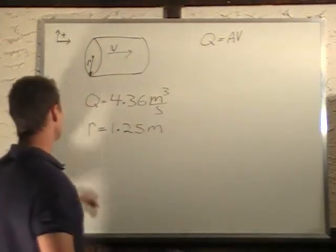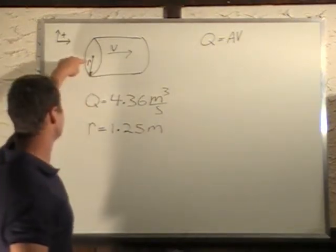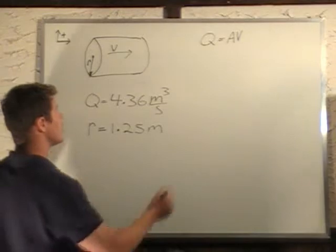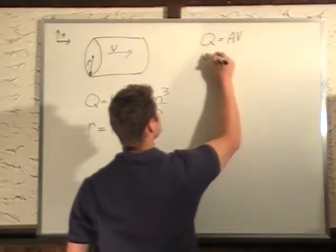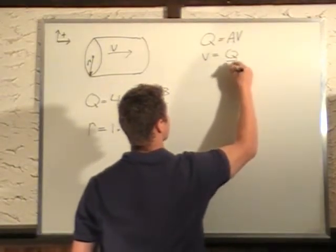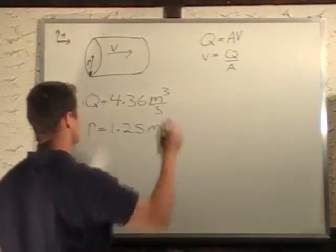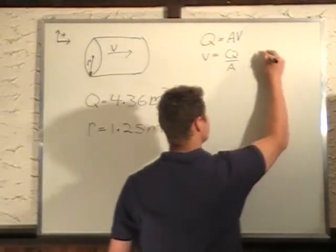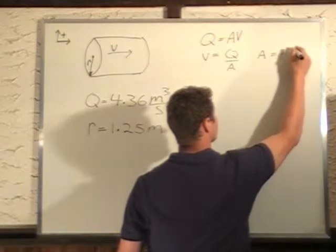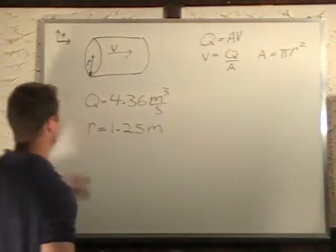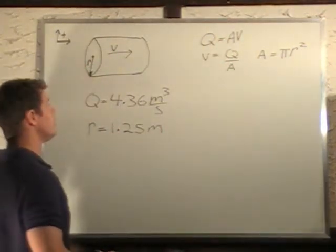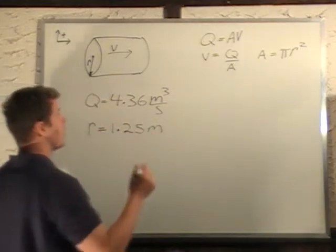So the area is going to be from this radius, the velocity is what we're looking for. V equals Q divided by A. We know Q, and A is pi r squared because the cross sectional area is pi r squared.